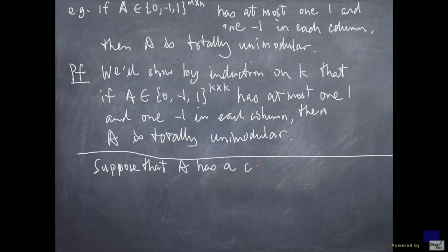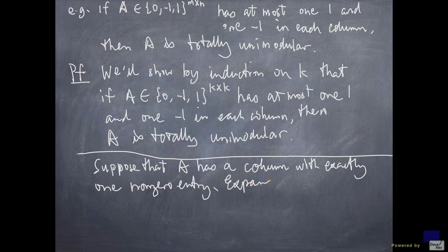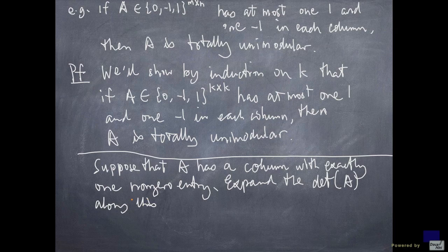Suppose that A has a column with exactly one non-zero entry. What we do is we expand the determinant of A along this column.